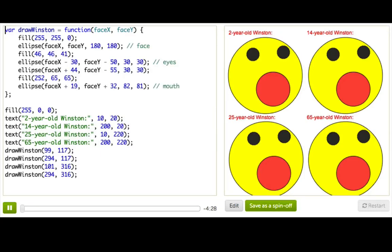We're back with our program that uses a function to draw Winston four times, and I've changed it to actually show what age he is at each point of life, and you'll see why soon.